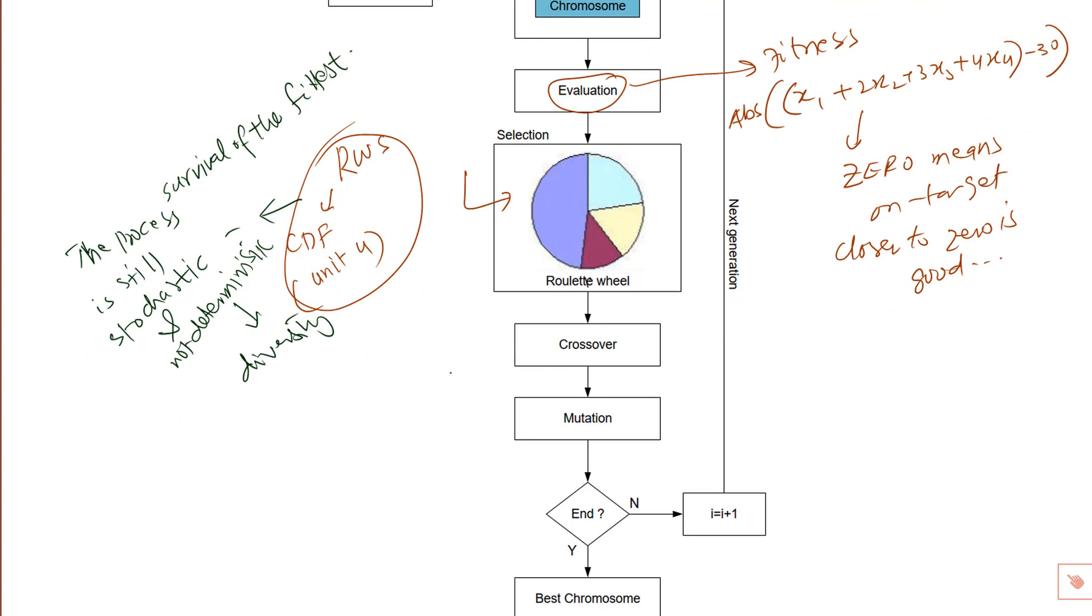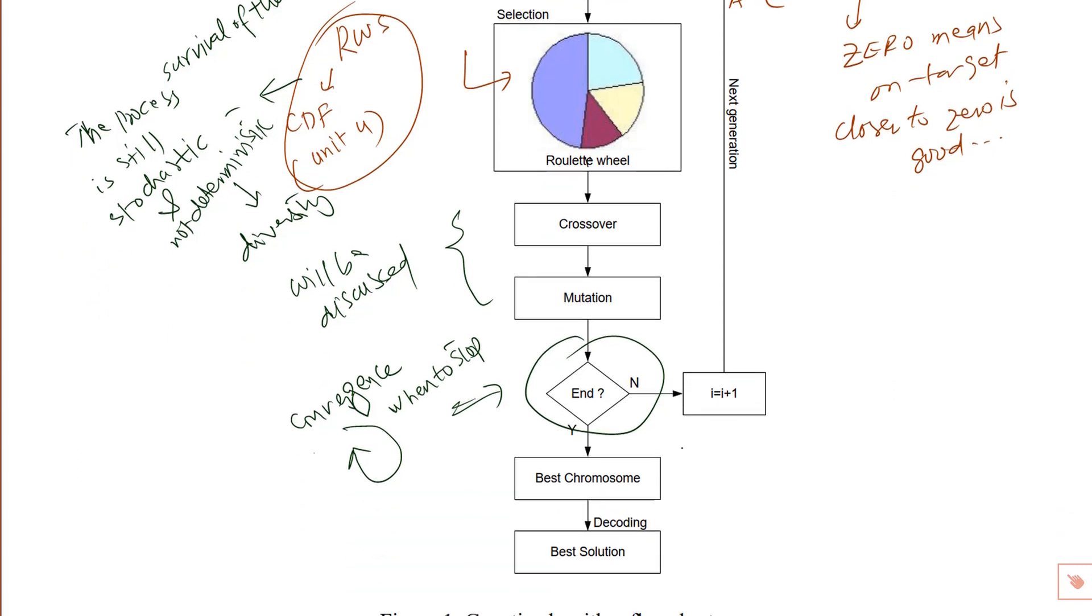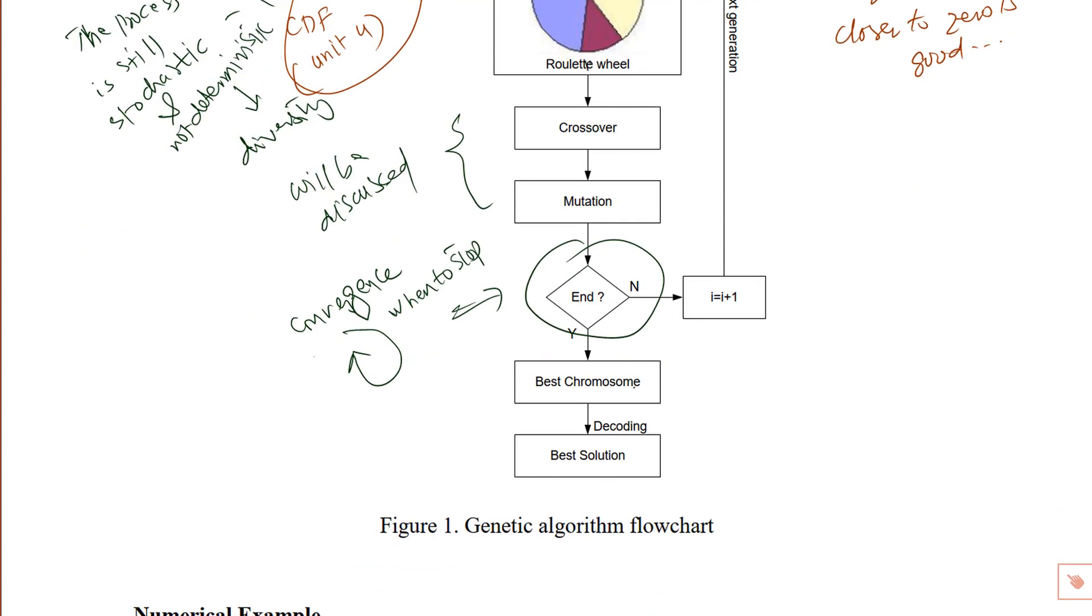Next process is our crossover and mutation, which we will discuss today. And the convergence we haven't discussed - it decides when to stop or whether to stop or continue the iterative process. And at the end, we select the best of the final generation as the possible solution to the problem.